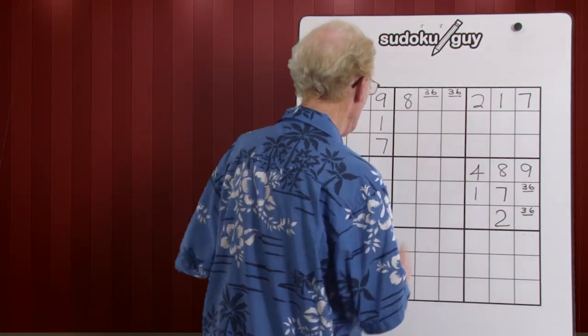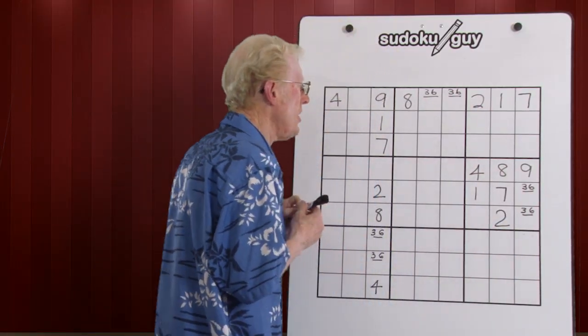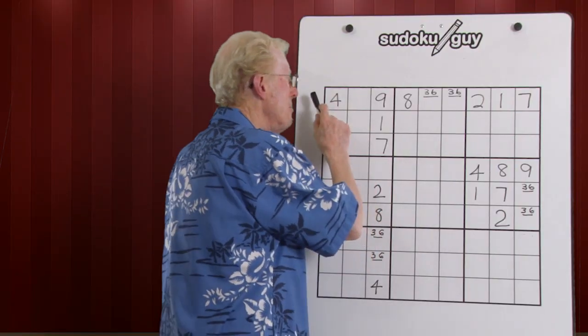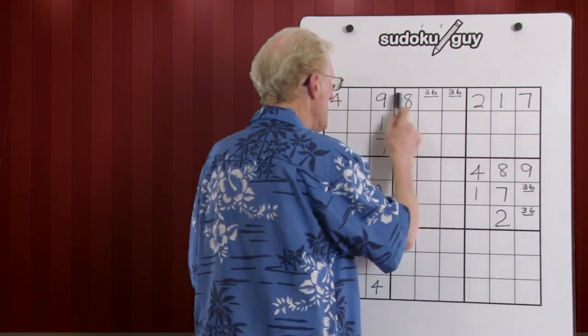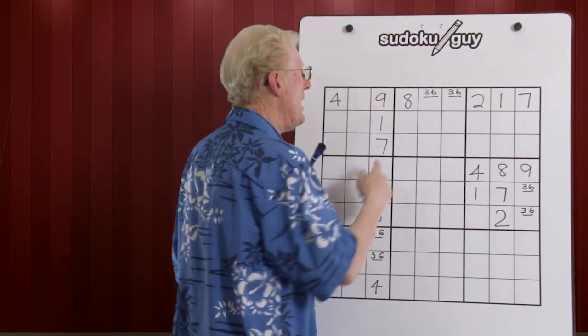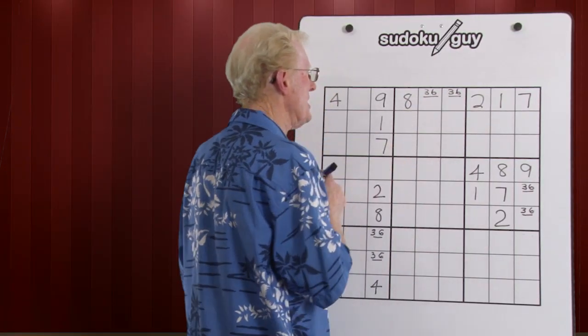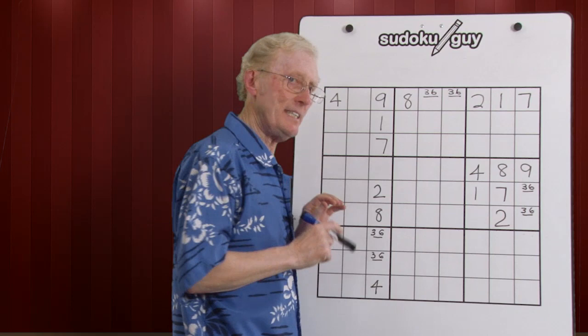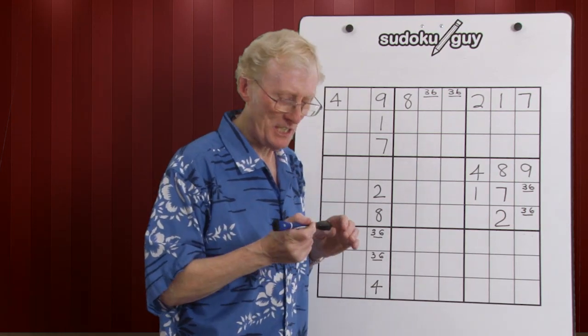So what I'm going to show you, let's say you had a puzzle and you had this along a row. You had a matching pair, three, six, three, six, and one empty cell. It's so easy to find that empty cell.